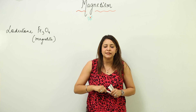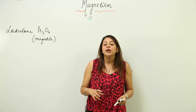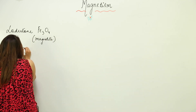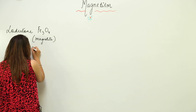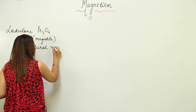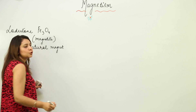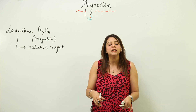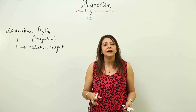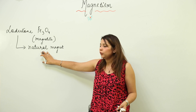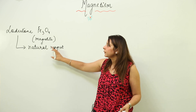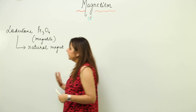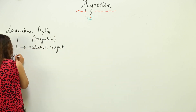That substance in the core could attract certain substances toward itself and is called loadstone. Its chemical name is magnetite. So in the core of the earth there is a substance which could attract certain substances toward itself, called loadstone. Since it was present naturally in nature, it is called a natural magnet. This is where the concept of magnetism came into play, after which scientists started preparing artificial or man-made magnets.